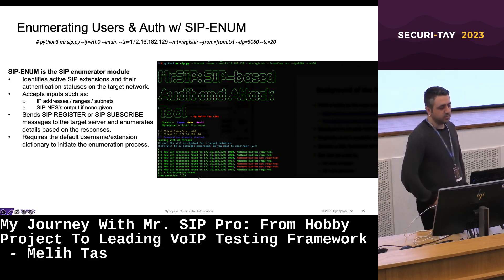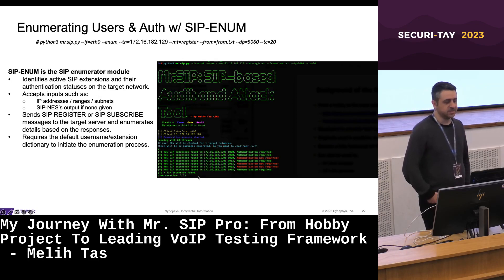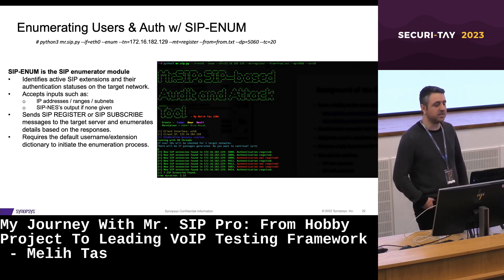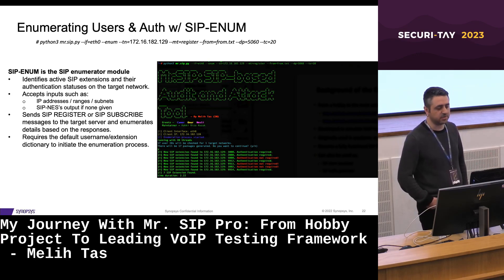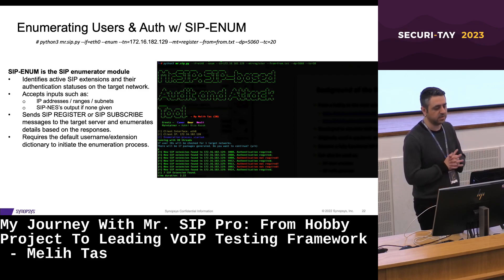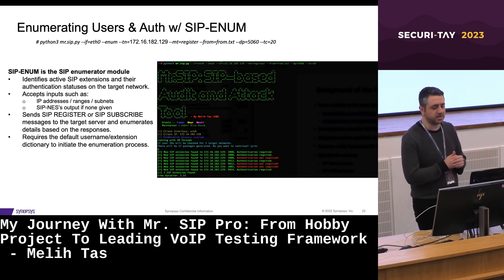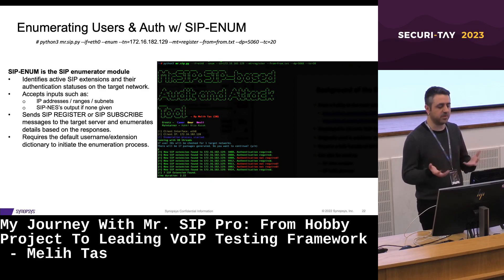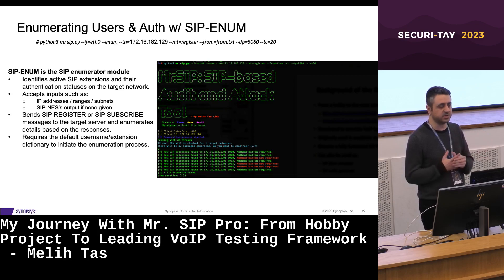Another information-gathering module is SIP Enum, a SIP enumerator. It helps identify active SIP extensions and their authentication statuses on the target network. It sends SIP REGISTER or SIP SUBSCRIBE messages to the target server and enumerates extensions based on responses. To initiate an enumeration process, SIP Enum requires a default username and extension dictionary.